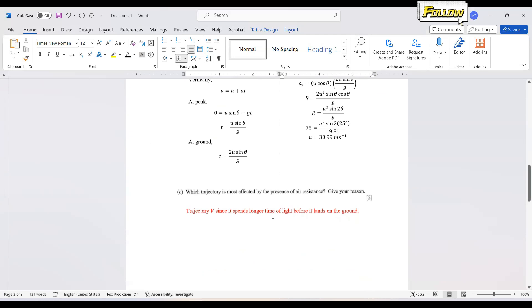So here to determine which is the most affected that we shall look at the time of flight. So the longer the time, the larger the effect of the air resistance. So the answer here is the trajectory V, since it spends longer time of flight before it lands on the ground. So that's all for question 16.